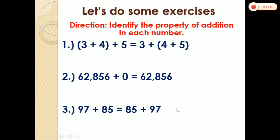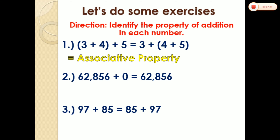Let's do some exercises. I want you to pause this video and try to identify the property of addition, and I will give you the answer. We have: (3 plus 4) plus 5 equals 3 plus (4 plus 5). What property of addition is this? The answer is associative property — it means changing group.